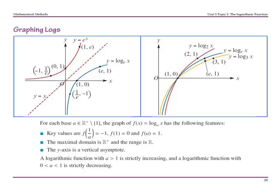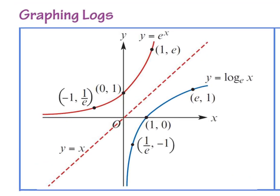This video looks at graphing logs. It follows on directly from graphing exponentials, remembering that they are inverse functions. That means an exponential and log graph are reflections in the y equals x line. So your x and y coordinates swap — x becomes y and y becomes x. That's the same for all coordinates.